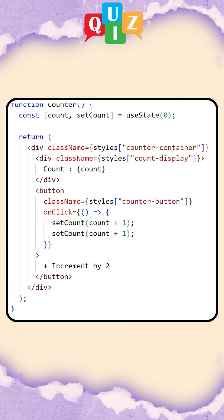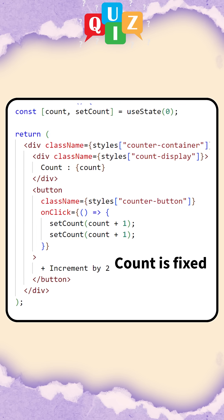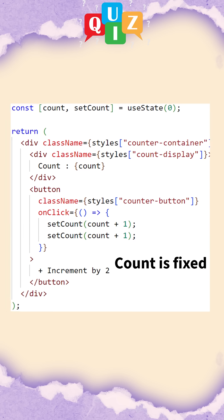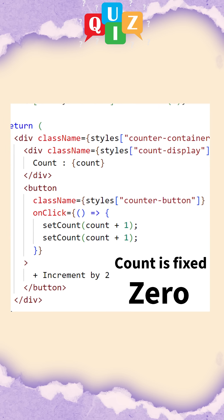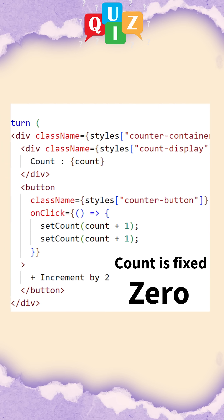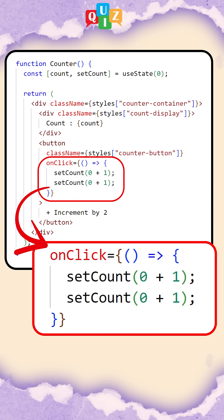Because inside the click handler, the count variable is fixed at the value it had when the component rendered, which was 0. So calling setCount of count plus 1 twice is actually telling React to set count of 0 plus 1 twice. So the value effectively becomes 1.